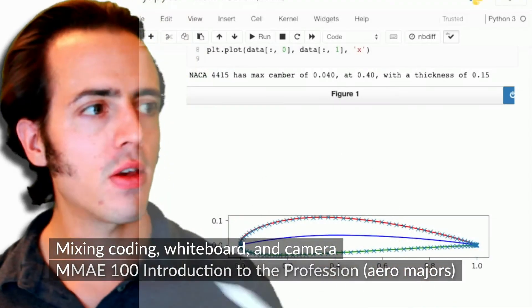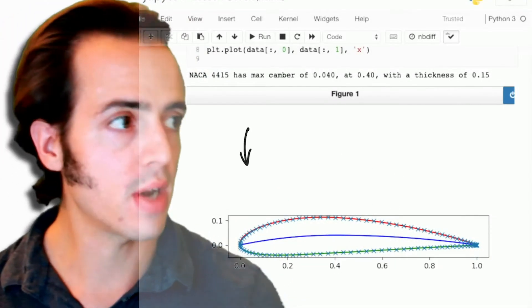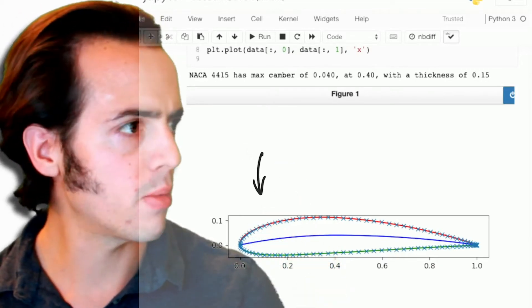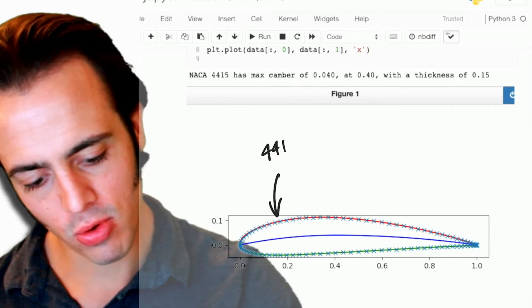All right, so we produced this script last week that helped us to plot different aerofoils. So this one here, let's move that arrow down a bit. This one here is the NACA 4415.